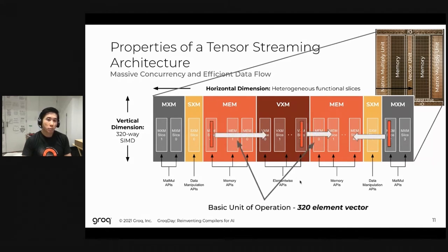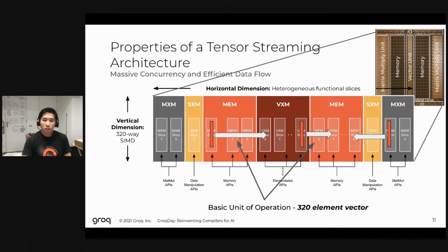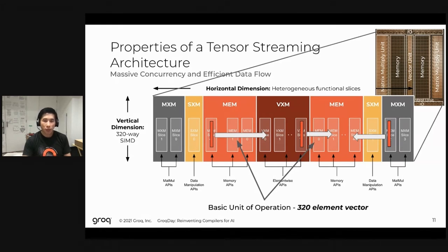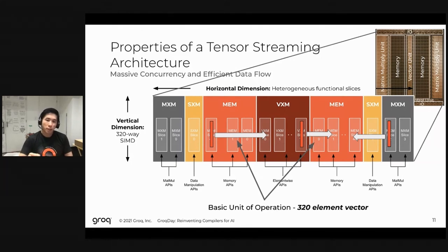To think about how data is processed on this chip, you can take a simplistic view and focus on the base unit of operation: a 320-element vector, roughly the vector size supported by the hardware. Data flows horizontally left to right or right to left, being ingested into memory and functional units in an extremely efficient manner. You can think of this as an assembly line of tensors being processed down a stream of data, creating extreme efficiency as you transform data down the line.